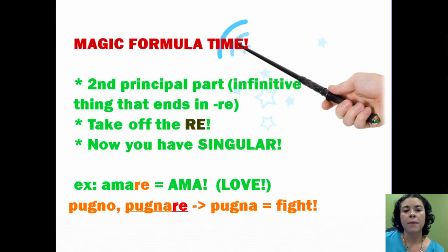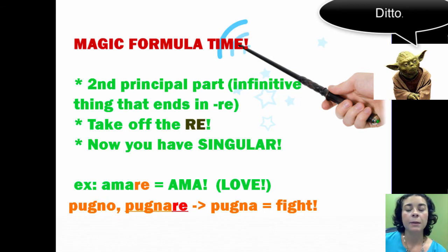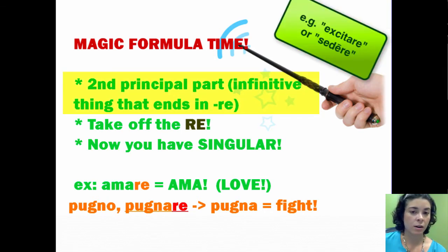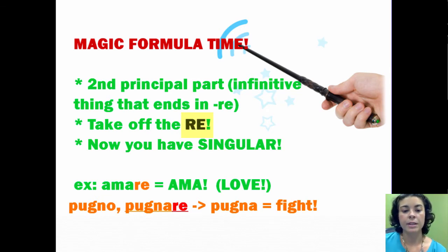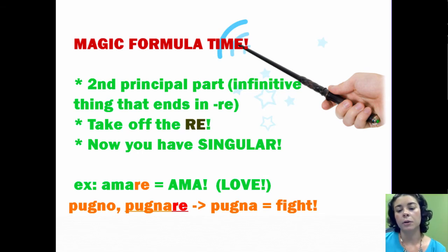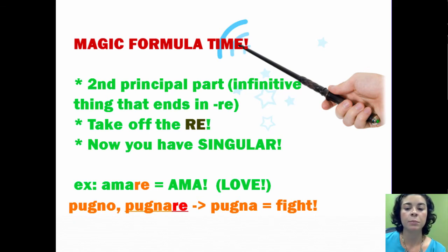So let's take a look at the magic formula for creating the imperative. For right now, we're going to take the second principal part, which is the infinitive — the word that ends in R-E, the second form of your verb. Now take off the R-E and you have your singular. An example is amare — take off the R-E and you're left with ama, which means love, or commanding someone to love. Another example: pugno, pugnare — take off the R-E and you have pugna, meaning fight.